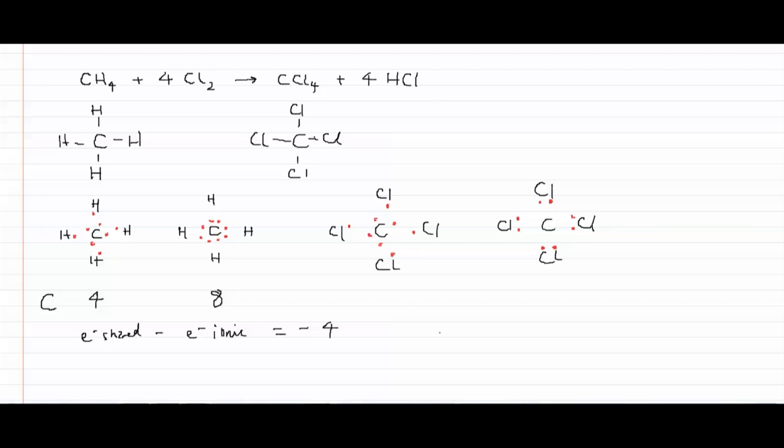And this time, when we look at the distribution of electrons, we've got four there around the carbon, but on the right-hand side in the product here with the ionic distribution, there are none. This time the oxidation number is shared minus ionic, which is plus four.